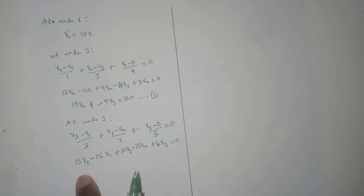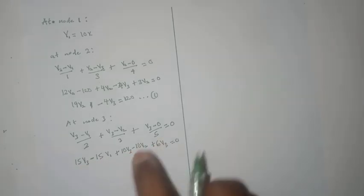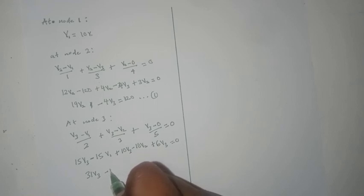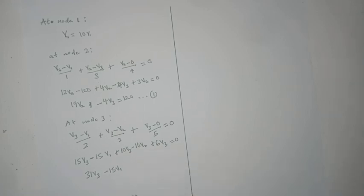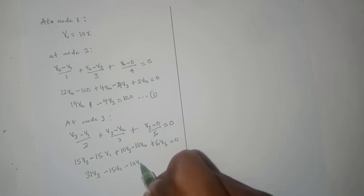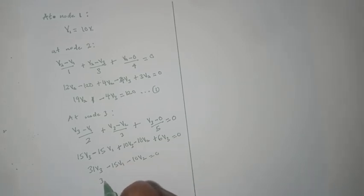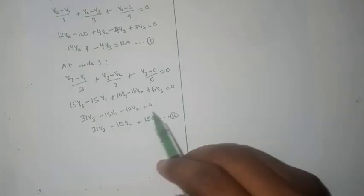Then we can simplify this further to get 31V3 minus 15V1 minus 10V2 equals 0. Recall that our V1 equals 10, so we can just say that 31V3 minus 10V2 equals 150, and we can call this equation 2.